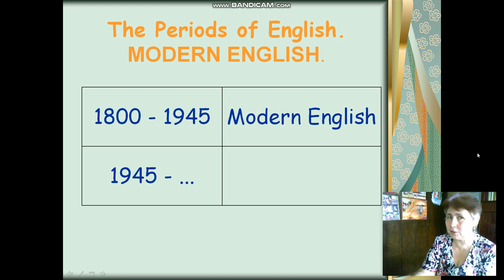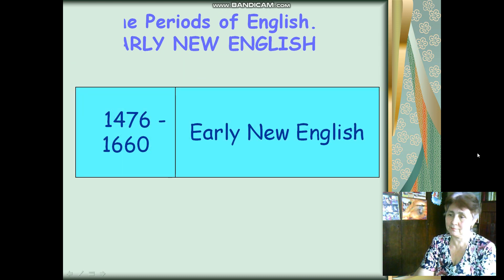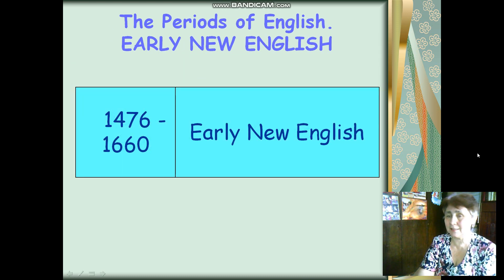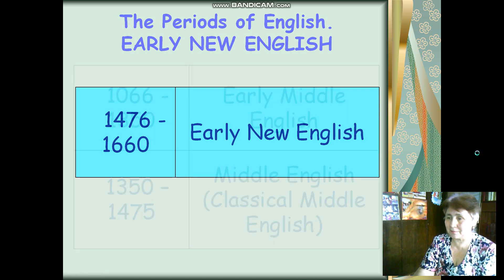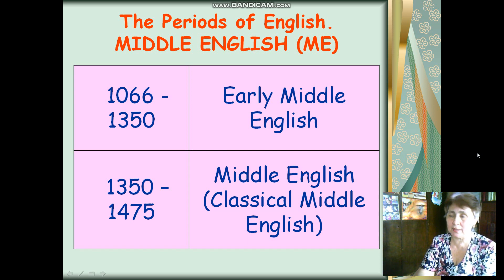As you can see, the first is the Modern English period. It starts from the 18th century and lasts until nowadays — the period of normalization, the Neoclassical period. Many laws and rules were established in this period. The Early New English period starts in 1476. The Middle English period is also divided into two periods, connected with Scandinavian invasions of Britain.